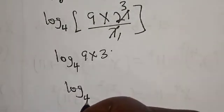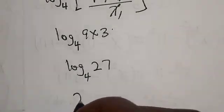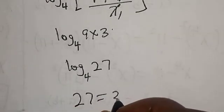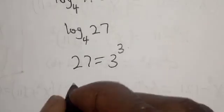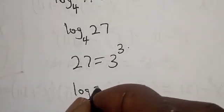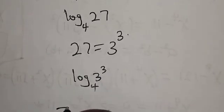Log₄ 27, and 27 is equal to 3 raised to power 3. Now log₄ (3³). This is equal to 3 log₄ 3.